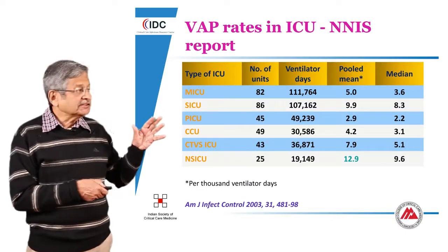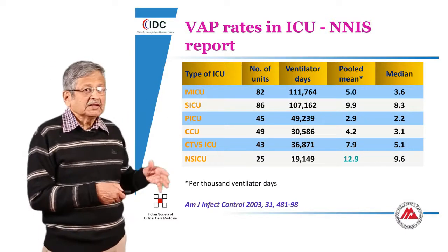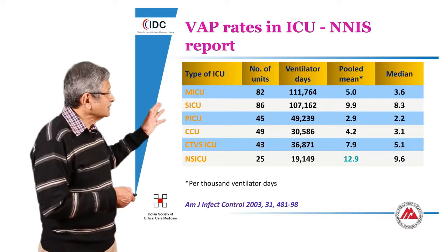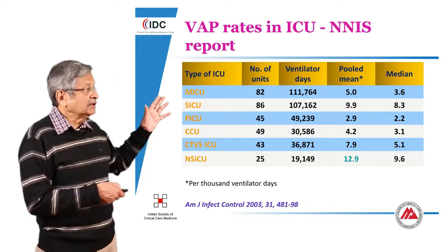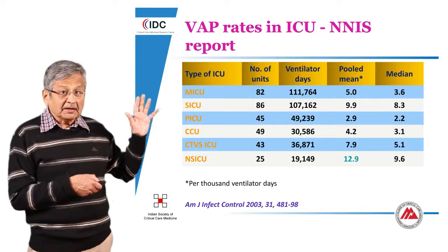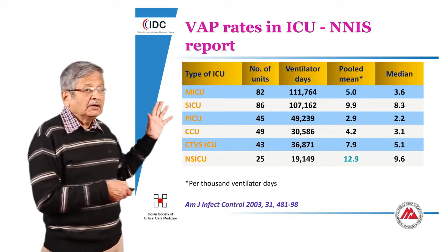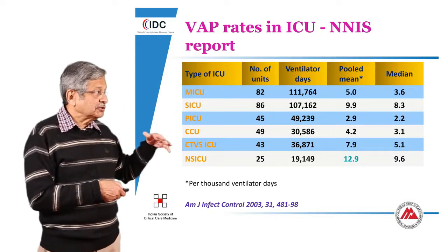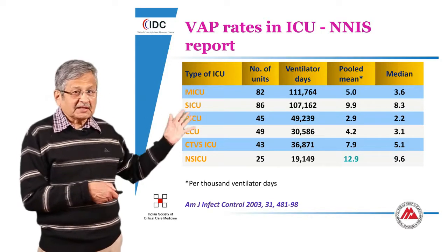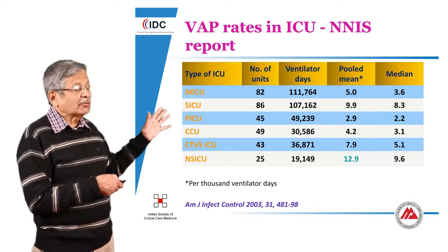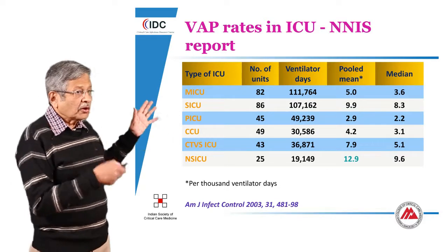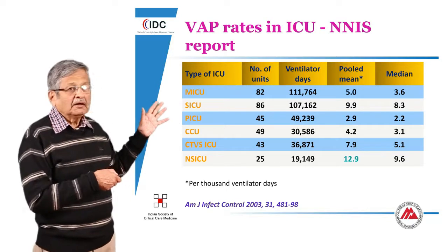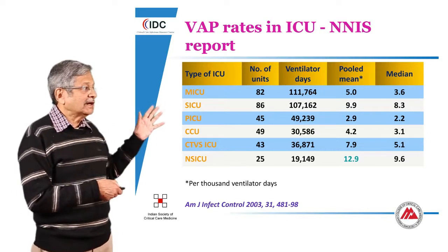Amongst the various intensive care units, the national nosocomial infection surveillance study has shown that the neurosurgical ICU has a higher incidence of ventilator associated pneumonias as compared to some other ICUs like the coronary care unit, for obvious reasons that these are sicker patients — they are unconscious, and highly likely to have tracheotomies and be on longer term mechanical ventilators.